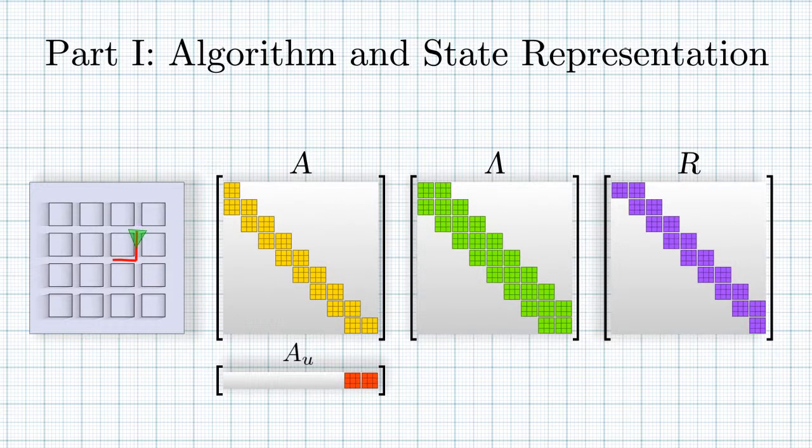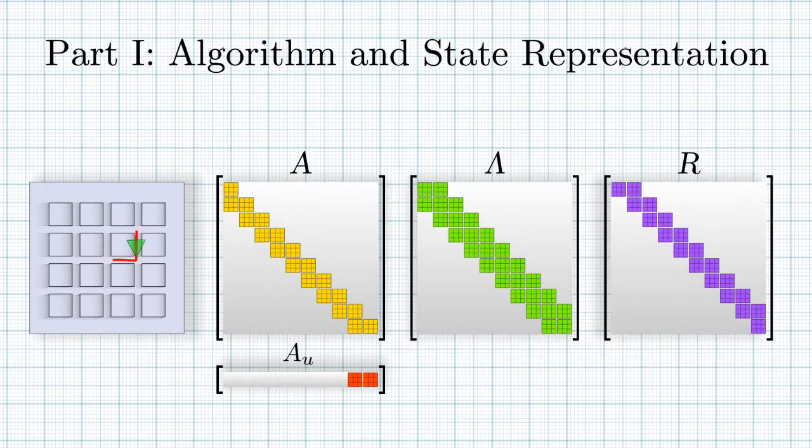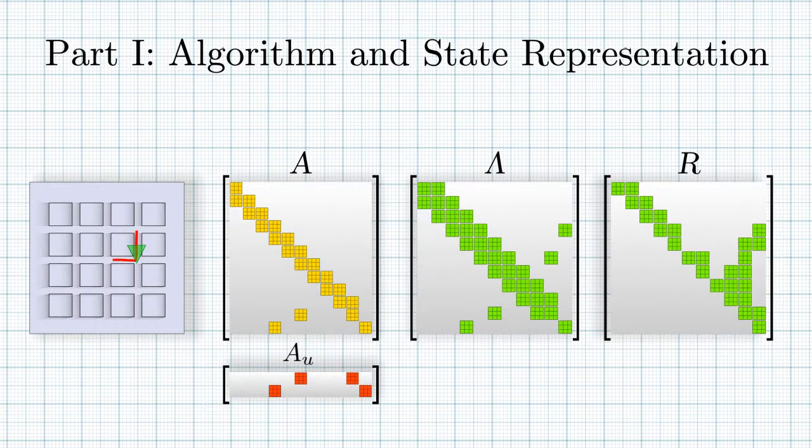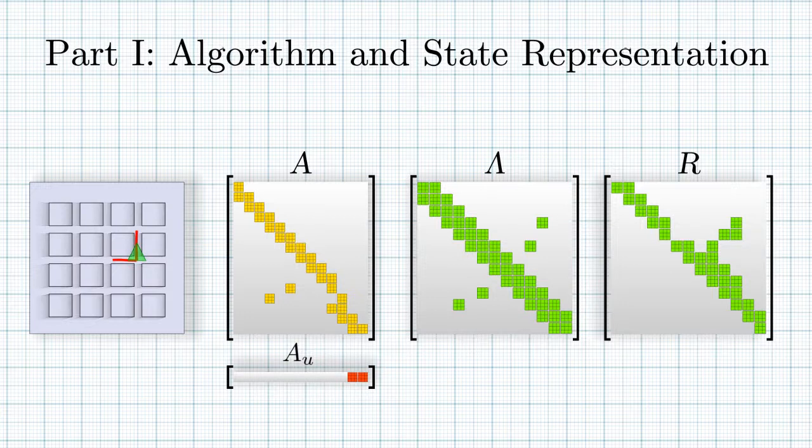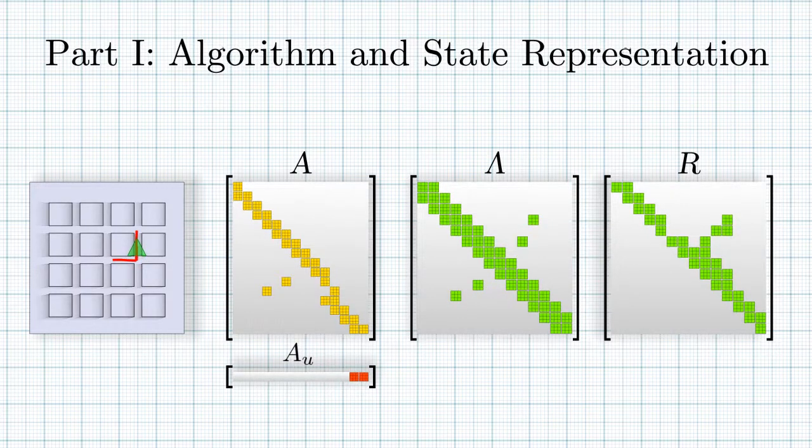Since we are solving a nonlinear problem, the linearization point changes every step. Most of the time, the changes are not significant. Therefore, we can change the linearization point only when needed. This is shown in the video by changing the color of the matrix R.